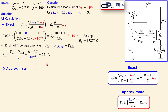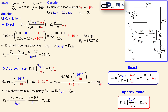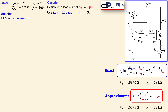Using the approximate expression with the same substitutions gives a slightly larger RE of 15,578 Ω. The R1 calculation remains unchanged at 73 kΩ since that part of the circuit is the same for both exact and approximate analysis. We can now collect both sets of solutions for comparison.